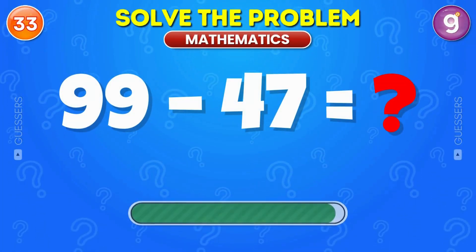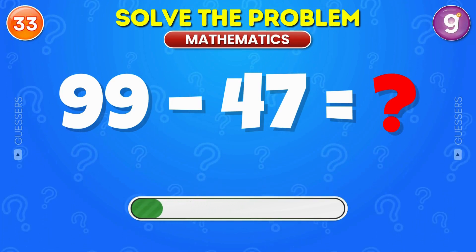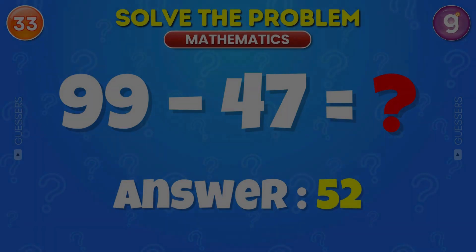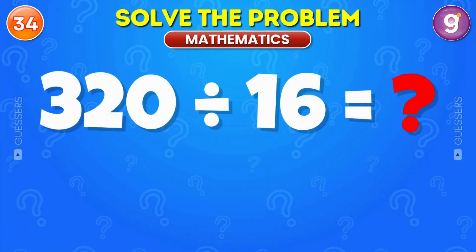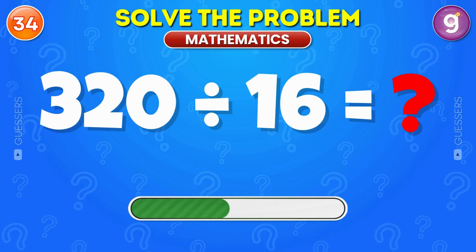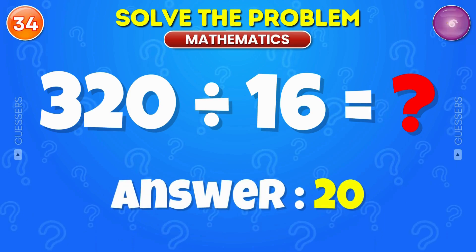Subtract 47 from 99. The answer is 52. Divide 320 by 16. The answer is 20.